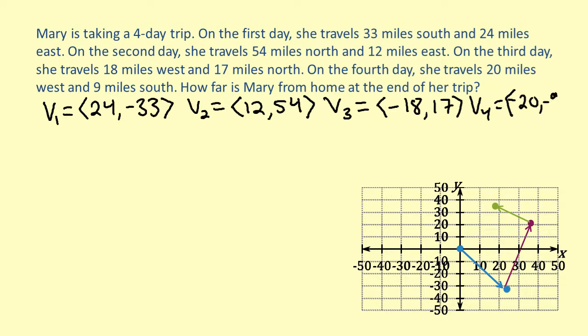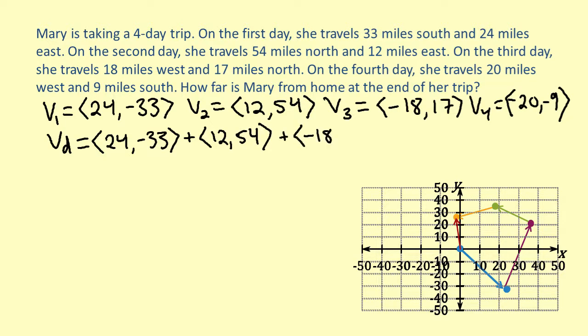Now that we can see where Mary ended on her trip, we can find the vector that tells us how far she is from home. We'll call this vector vd. To find this vector, we need to add our four vectors together. To do this, we'll add all the values in each component. This means all of the x values get added together and all of the y values get added together.